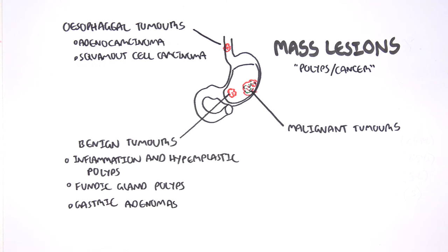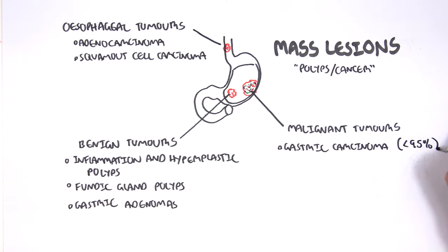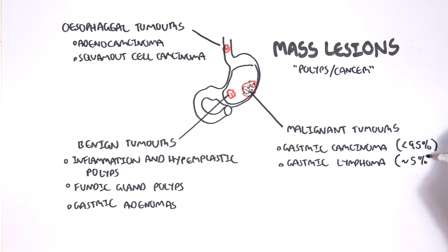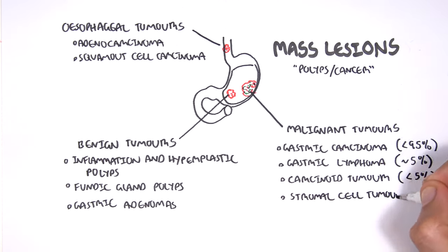Malignant tumors of the stomach, there are a few types. These can be gastric carcinoma, which is the most common, up to 95%. We can have gastric lymphomas, roughly 5%, and then carcinoid tumors and stromal cell tumors, which are less common.